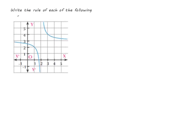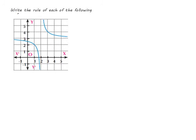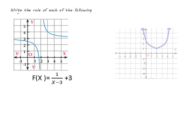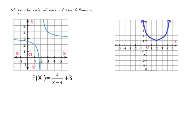Now, write the rule for each of the following graphs. First, determine the point of symmetry. For the fractional function, the point of symmetry is (3, 3), so the rule is f(x) = 1/(x − 3) + 3. For the parabola, the vertex is (2, 1), so the function is f(x) = (x − 2)² + 1.